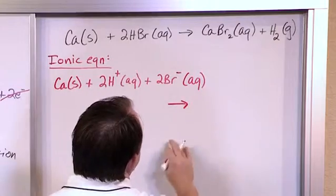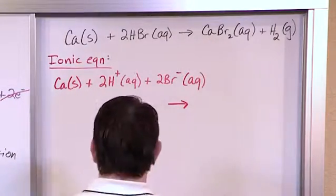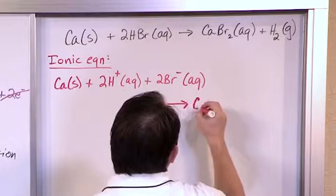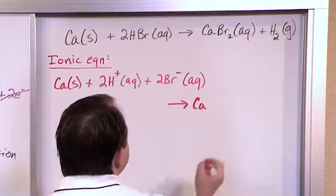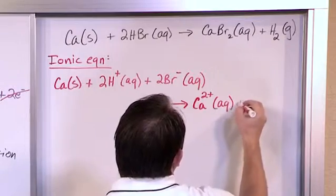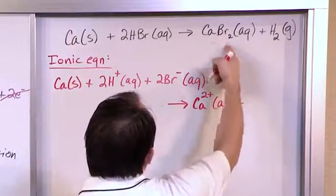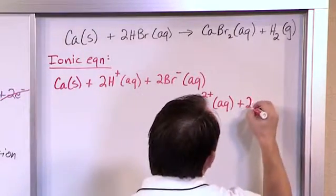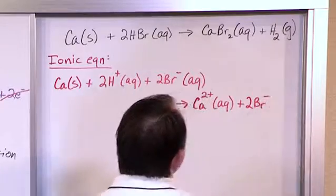On the right-hand side of the equal sign, I have CaBr2, so I have 1 calcium, and the charge on calcium from the periodic table, if you look at it, is plus 2, aqueous solution. But here I have Br2. There's 2 bromine, so I need to carry that with a 2, Br. Bromine always wants to be negative.